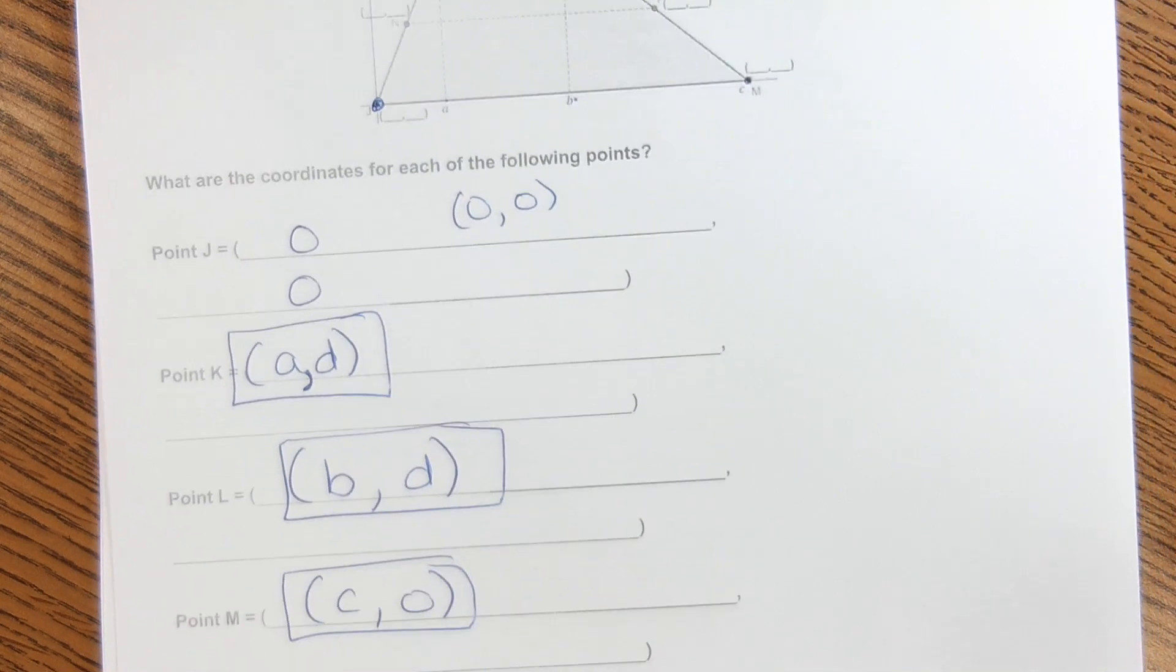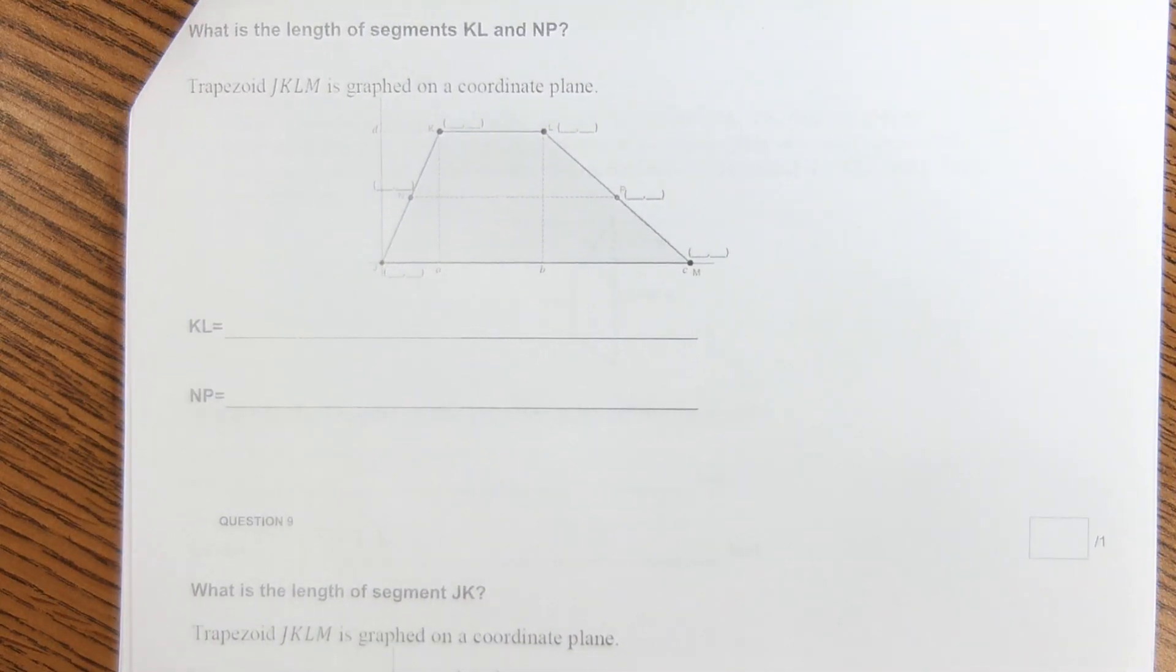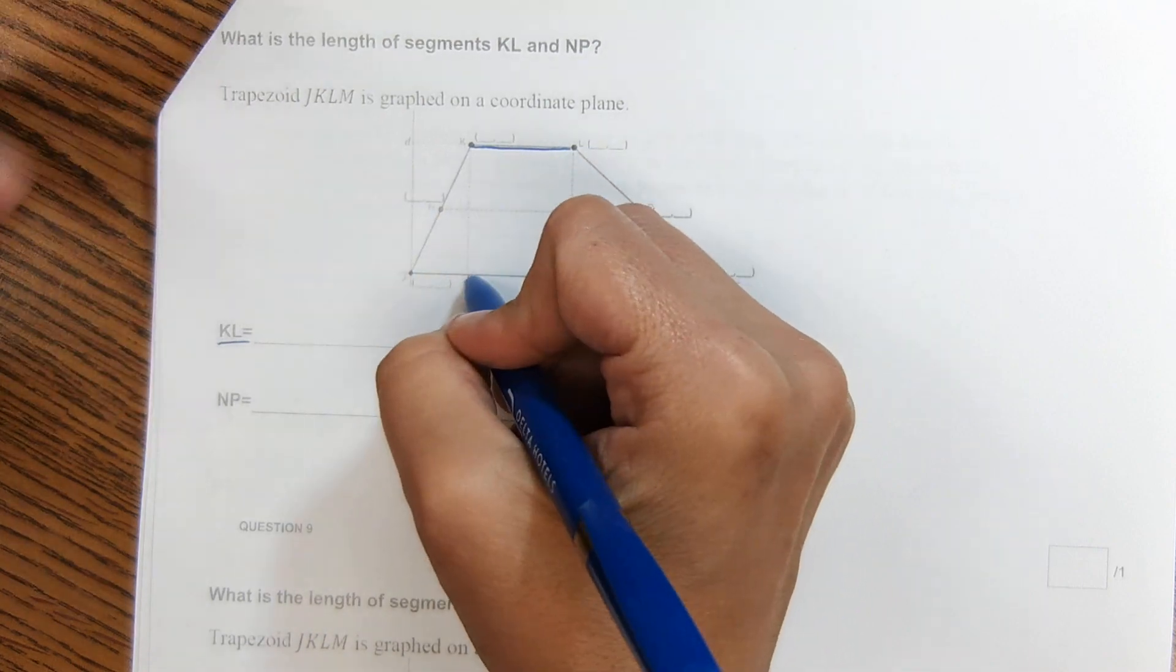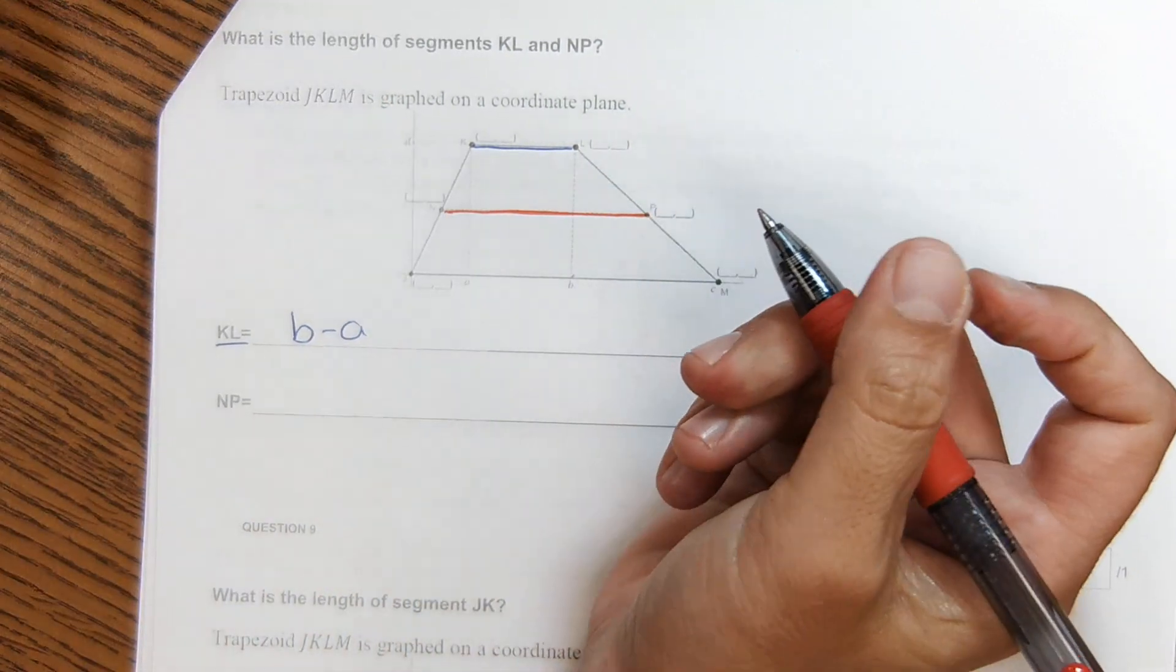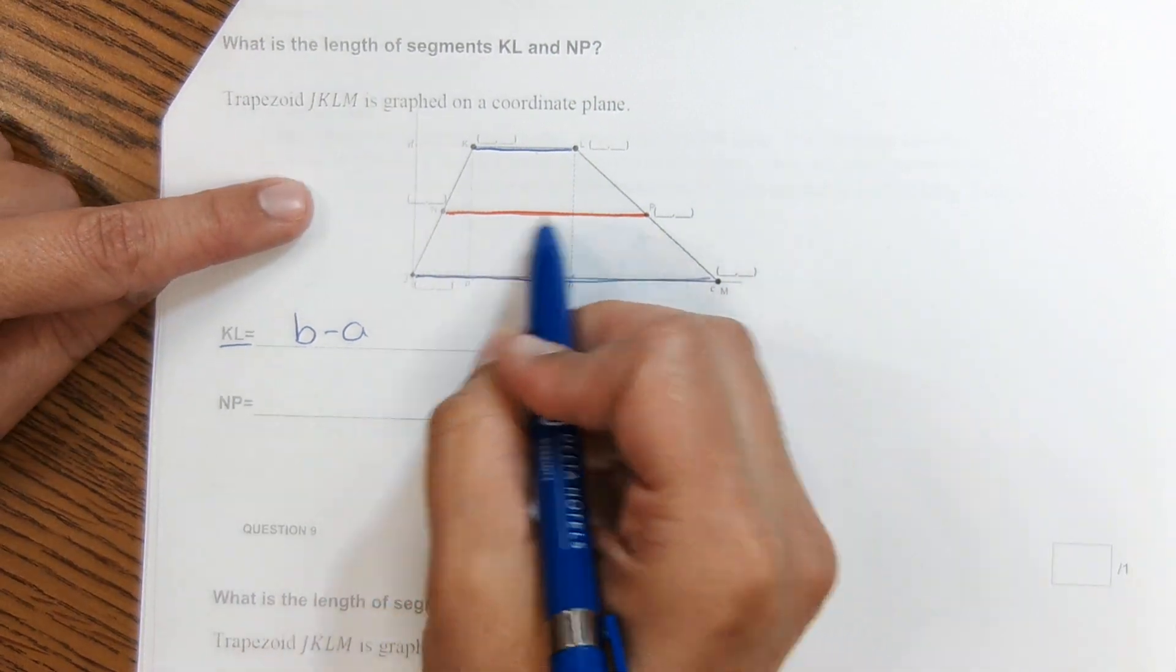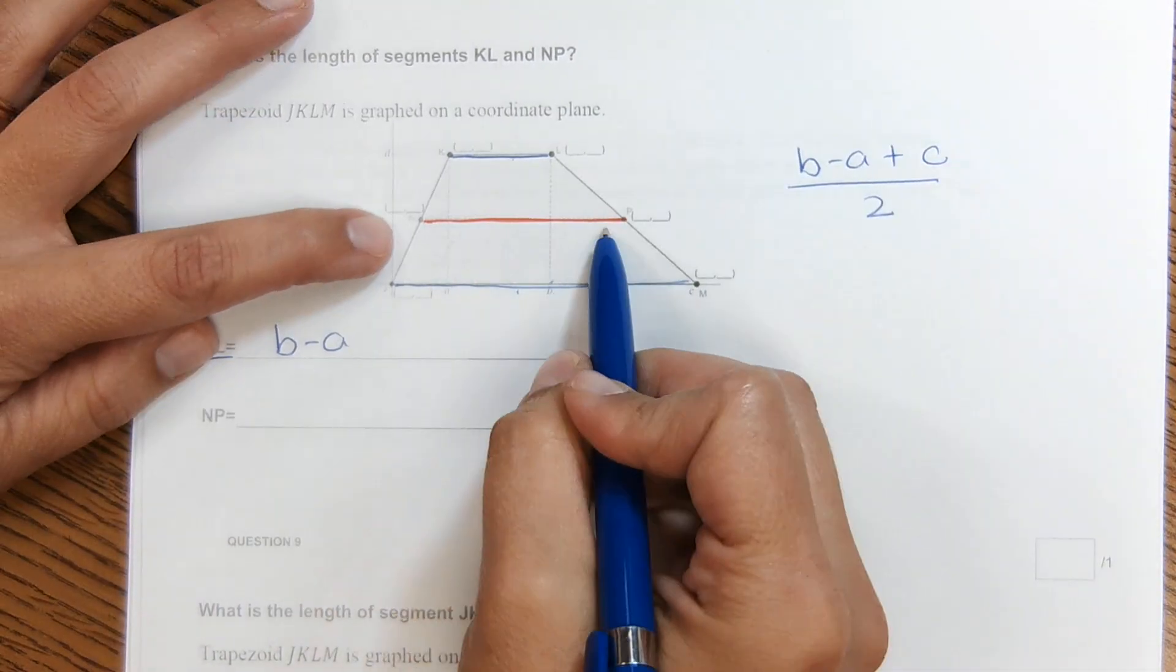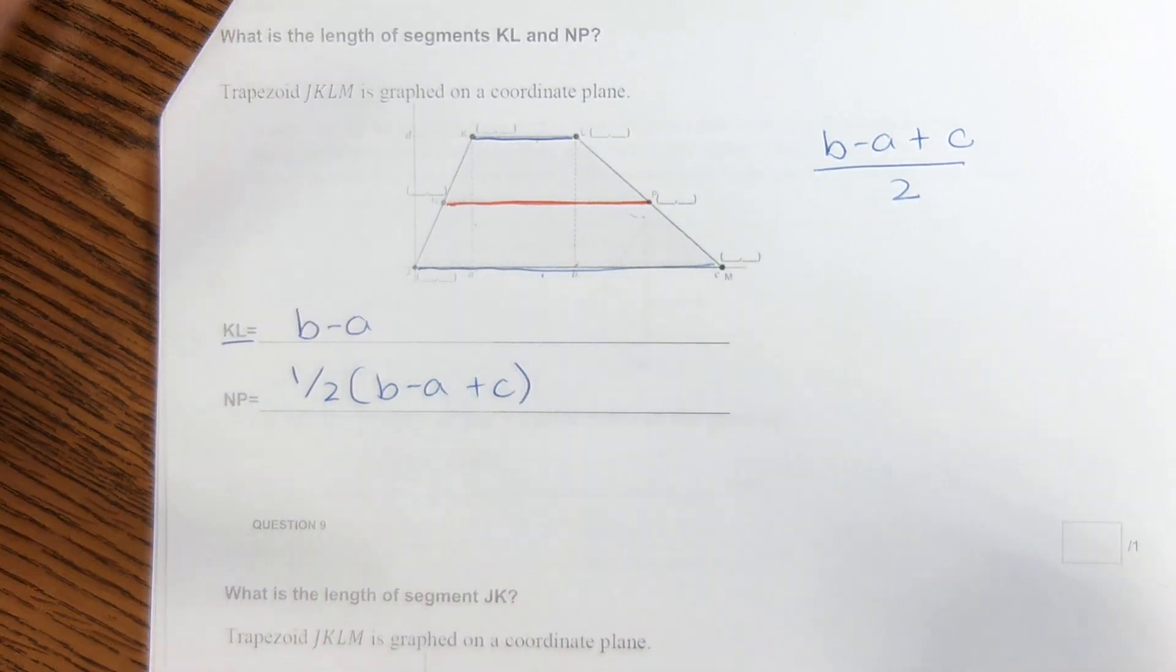Okay, and the next problem. Okay, so the trapezoid that we saw in the last problem is graphed on the coordinate plane. It wants to know the length of KL now. So KL is right here. And again, we're not using numbers, we're using letters. So it looks like l is at b and k is at a on the x-axis. So it would just be b minus a. And then NP right here, this is a mid-segment of the trapezoid. The mid-segment is the average of the two bases. So we need to add the lengths of the two bases and divide by two to find that mid-segment length. So here's how I see it would be the length of KL would be b minus a, plus the length of this base, which would be c, and then divide by two to get the average to get this. Now, how would I type that in the box? You might put 1 slash 2 and then b minus a plus c, and that's how you can put it in the box.